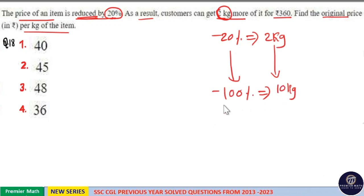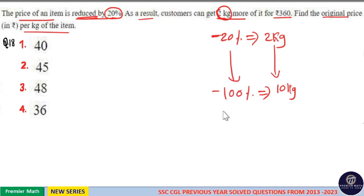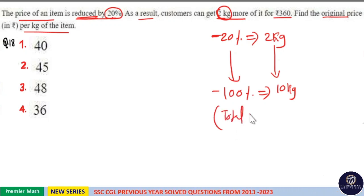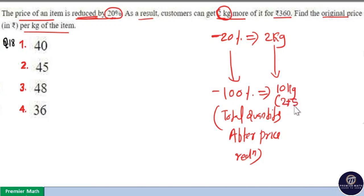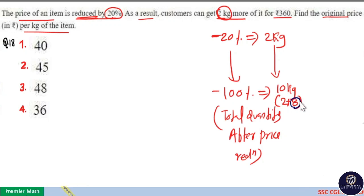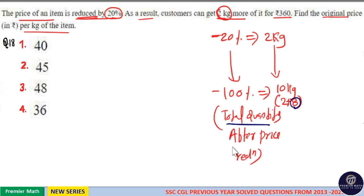This 100% reduction is made from the 20% reduction, which means this 100% is the total quantity after price reduction. Because this 10 kilogram includes the additional 2 kilogram plus the original 8 kilogram. That is, the original amount was 8 kilogram. To this 8 kilogram, because of the 20% price reduction, 2 kilogram was added. So this 10 kilogram is the total quantity after price reduction.